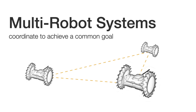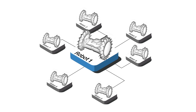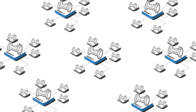Multi-robot systems coordinate and share information in order to achieve a common goal, but they're susceptible to errors that we need to detect. When debugging, we need to not only consider a robot's own state, but also what the robot thinks of other robots' states, creating this complex web of what all robots think of each other.